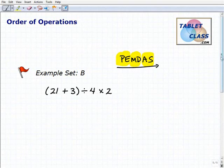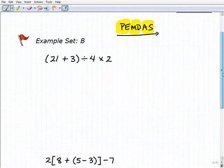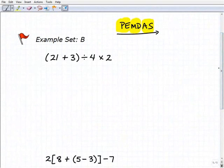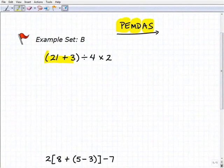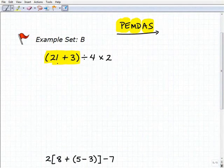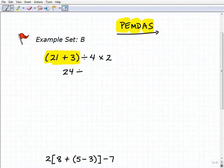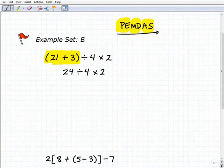So with that in mind, let's apply this procedure to these problems. I look at my first problem, looking for parentheses or grouping symbols, and I have them right here. I have to do what's inside the parentheses first. So I have 21 + 3, that's going to be 24 ÷ 4 × 2.